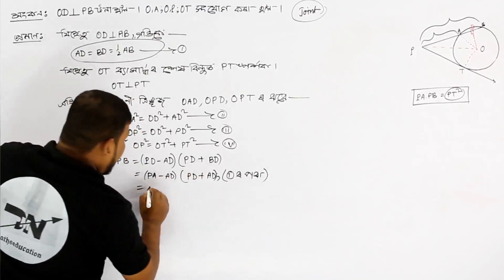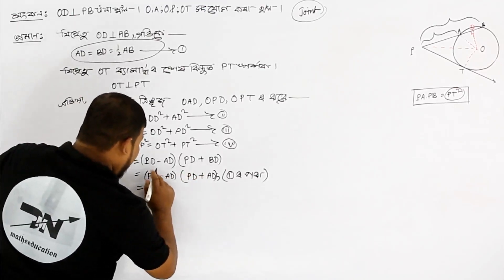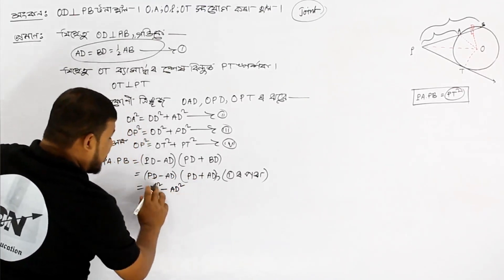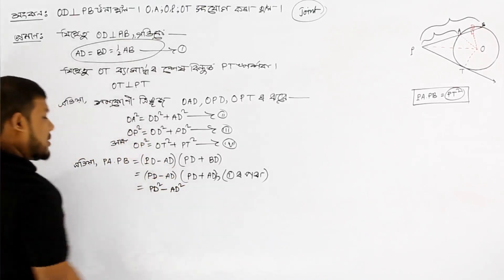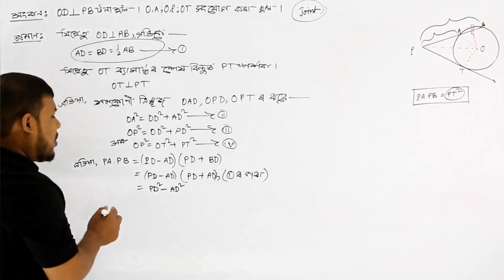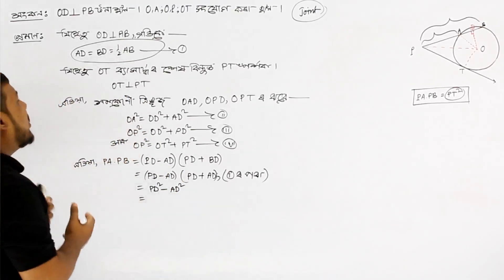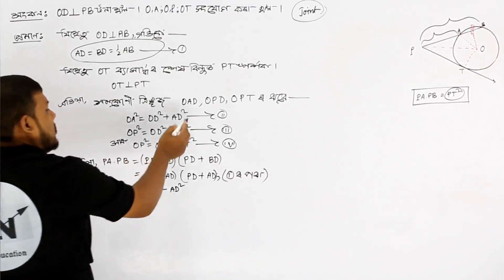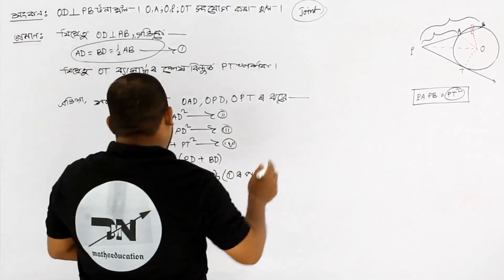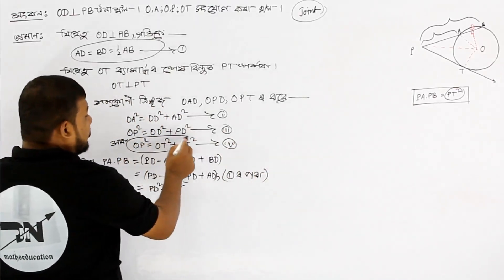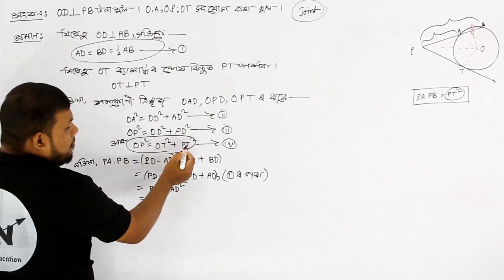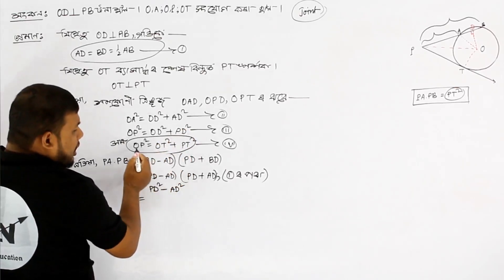Using the formula a minus b all into a plus b, we get P A squared minus A D squared. Using P D squared minus A D squared and the a squared minus b squared formula, we can find the relation. If we target P T, we can get P T squared from O P squared.